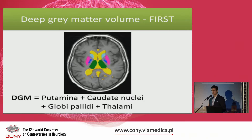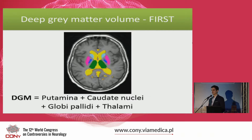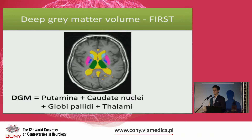We also measured the volume of deep gray matter, which we defined as the total volume of putamen, caudate nuclei, globi pallidi, and thalami. For that we used the FIRST software, and these measures were also normalized for head size. We then correlated neurological impairment scores with brain volumes and copper metabolism variables to identify any significant relationships.